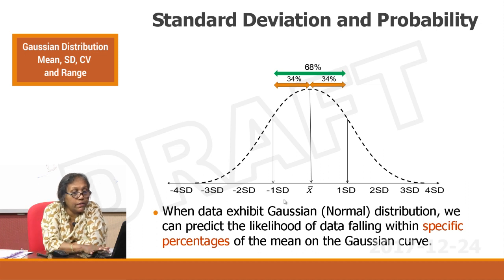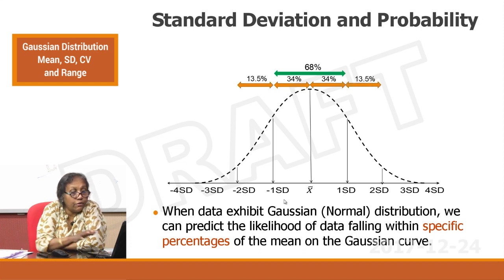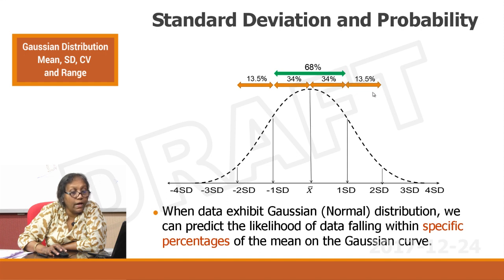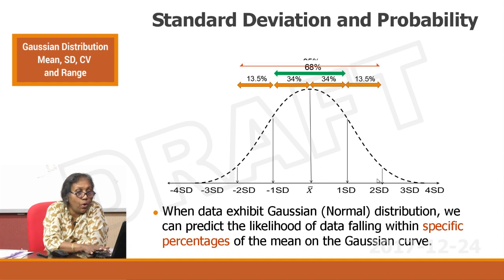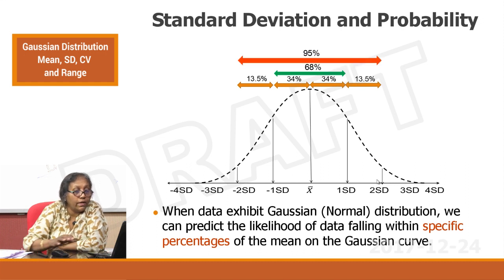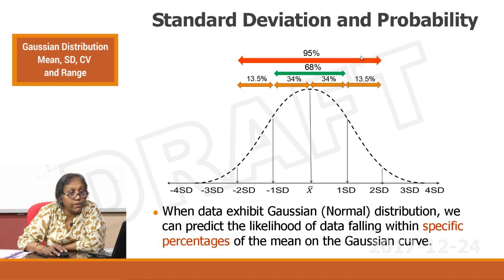Looking further, there is another 13.5% falling between -1 SD and -2 SD, and 13.5% falling between +1 SD and +2 SD. Altogether, 95% of the points cluster between the mean minus 2 SD and plus 2 SD.